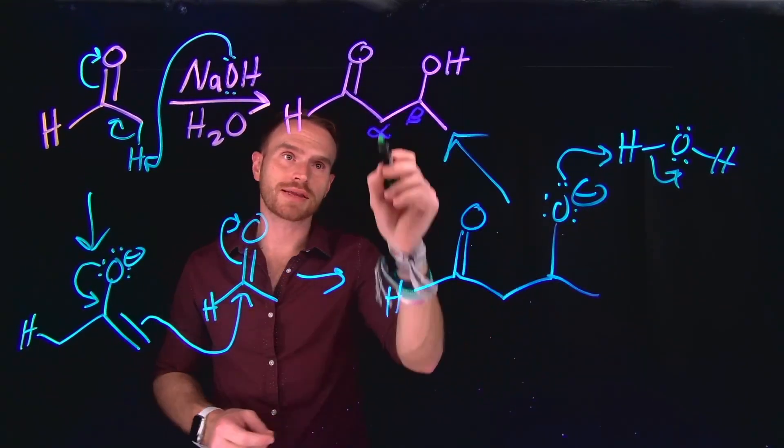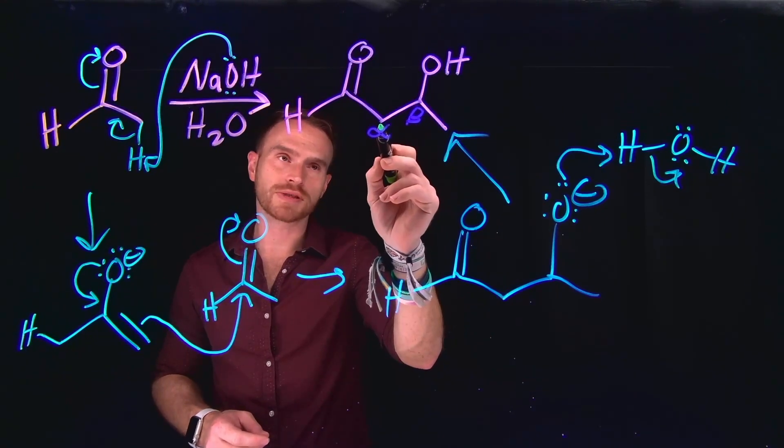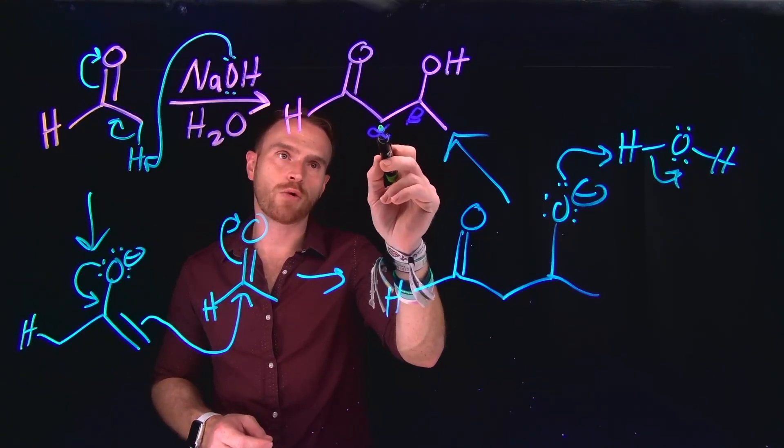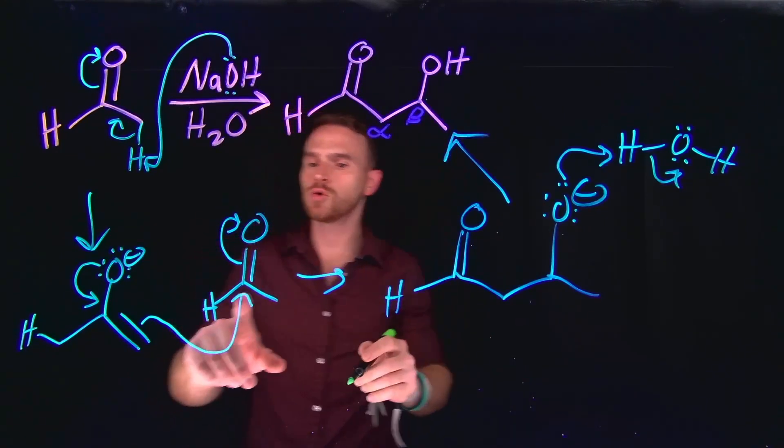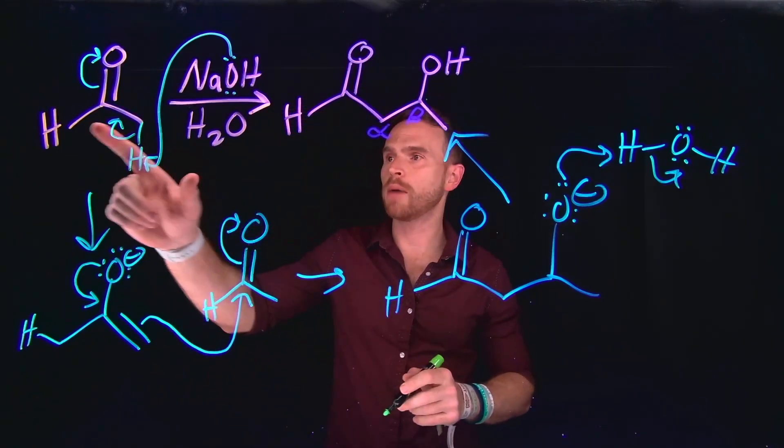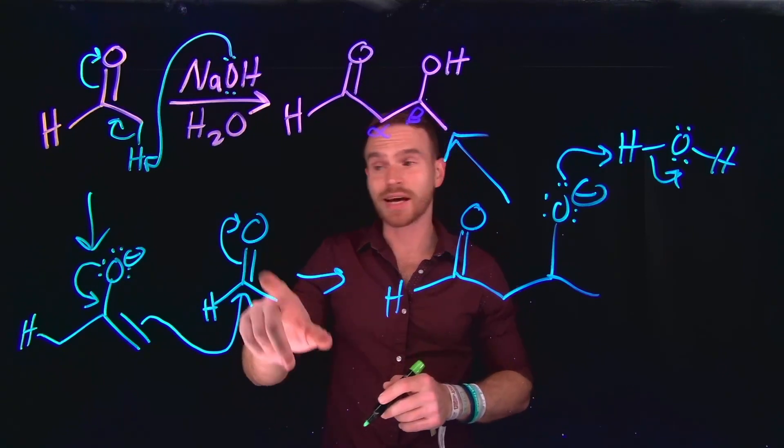The alpha-carbon position has now formed a new carbon-carbon bond through homocoupling of these acetaldehyde species. Now that you've learned about the formation of enols, enolates, and reactions they can do like alpha-halogenation and aldol reactions, let's try some practice problems.